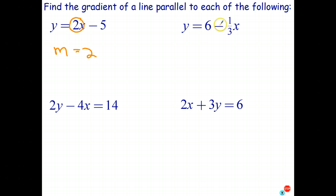With this equation, remember the gradient is the coefficient on x, not the first number. So that's really 6 plus negative 1/3, sorry, negative 1/3. The coefficient on x is negative 1/3. So the gradient of this line is negative 1/3. And the gradient of any line parallel to it is also negative 1/3.